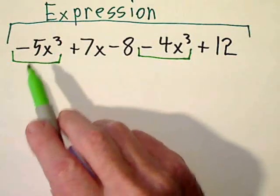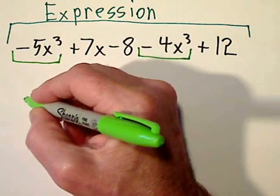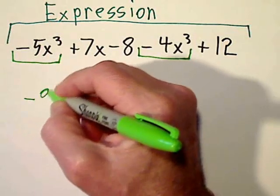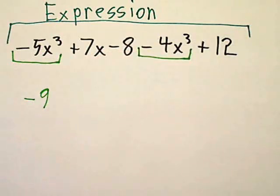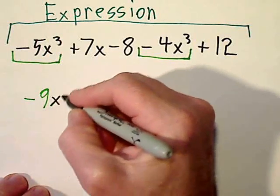And all you do is combine the negative 5 and the negative 4. Signs are the same, so you add. That would give us a negative 9. And the x to the third, that just comes along for the ride. You don't change that at all.